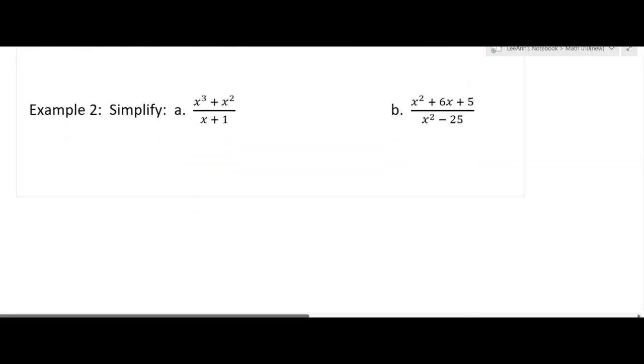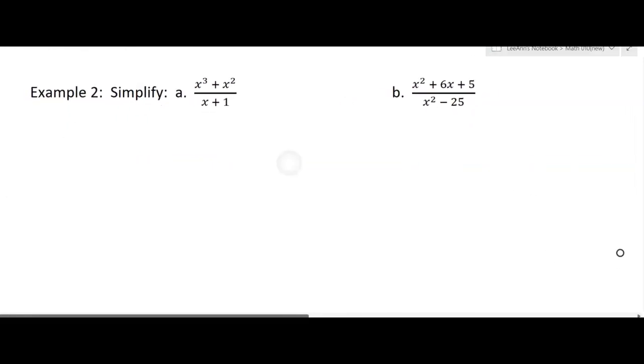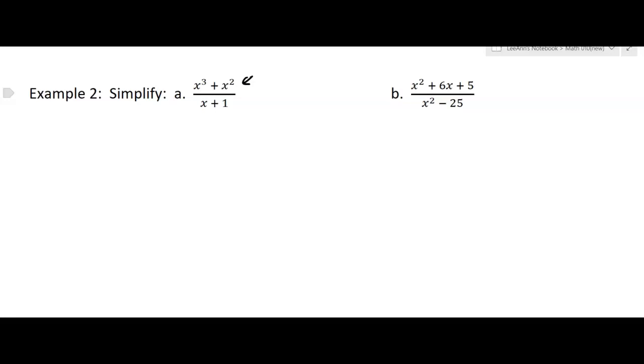So we have 2 examples now. It might be tempting to just start canceling stuff, but don't do it. Don't fall for that. First you have to get this in terms of multiplication. Right now that numerator is an addition thing, stuff plus stuff. But there's a GCF, which is x squared. So I'm going to factor out the x squared and I get x plus 1.